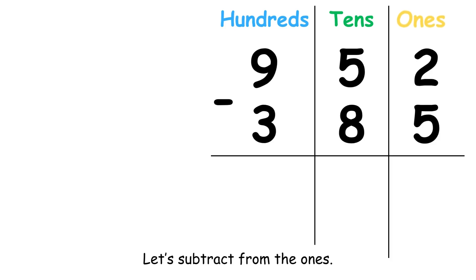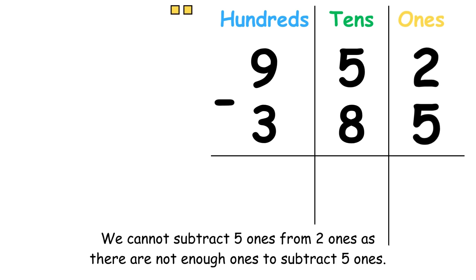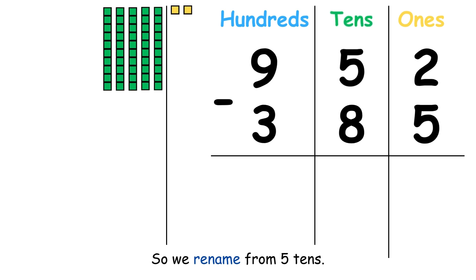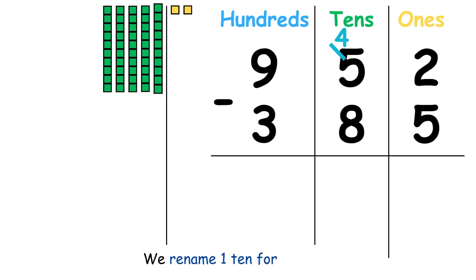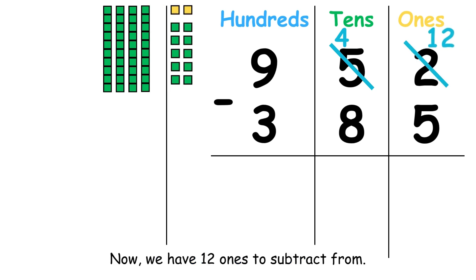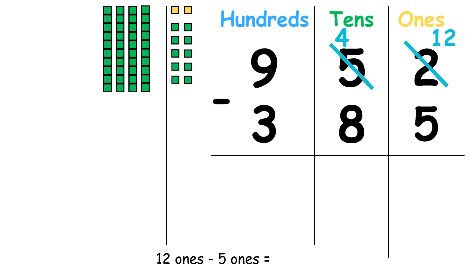Let's subtract from the ones. We cannot subtract 5 ones from 2 ones, as there are not enough ones to subtract 5 ones. So we rename from 5 tens. We rename 1 ten for 10 ones. Now, we have 12 ones to subtract from. 12 ones minus 5 ones equals 7 ones.